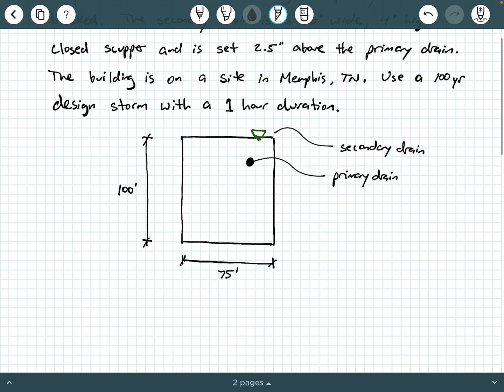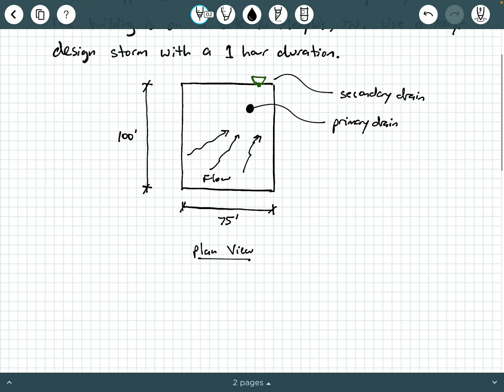So here is our plan view of our roof. This is looking down on the roof, and we can see that the roof drainage area is going to be 100 feet by 75 feet. We can tell that that's the roof drainage area because this entire area is going to have to drain to these drains here. We can even put some little notes here, some little arrows for the direction of flow.